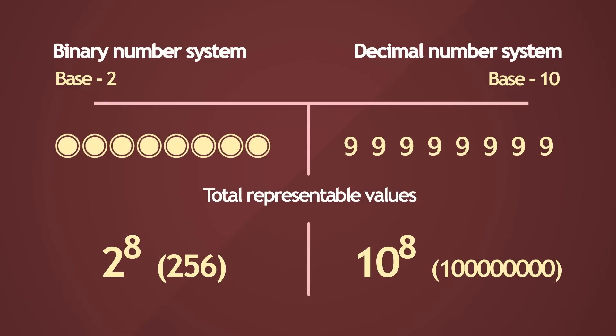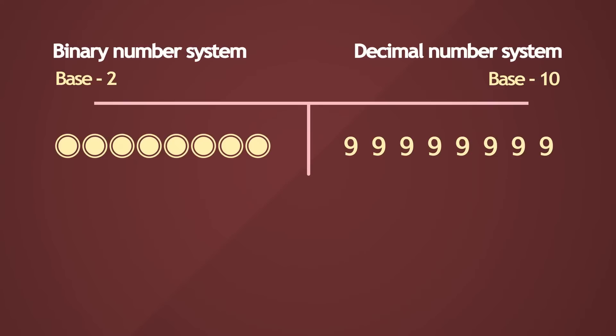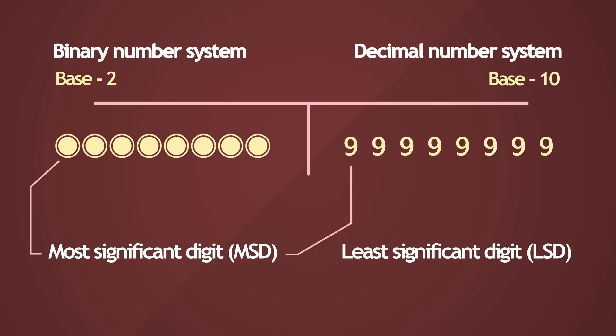The binary system is base 2, since each digit is capable of representing 2 states, either 0 or 1. And likewise, the decimal system is base 10, as each digit has a range between 0 and 9. Numbers in both systems are written from left to right, with the most significant digit on the left side, and the least significant digit on the right.